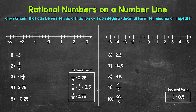Now let's look at number one. We have negative three. So we need to graph negative three, which is going to be to the left of zero. Negative three is right here.